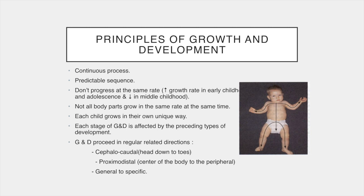There are some general principles of both growth and development. Growth and development are continuous processes and occur in a predictable sequence. However, growth and development do not progress at the same rate across childhood. There are times of rapid development and times of plateau. For example, there is an increased growth rate in early childhood and then again in adolescence, with a slower growth rate in middle childhood. In addition, not all body parts grow at the same rate at the same time, hence the sudden increase in femur length in adolescence, although body parts do grow in proportion with each other.